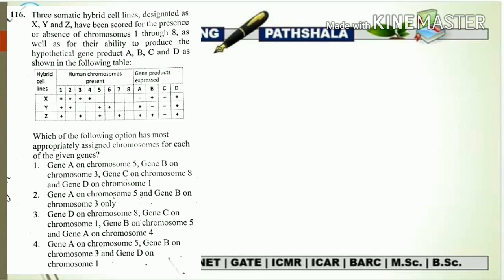So they have given you a hybrid cell line that is XYZ and they told that there is a presence of chromosomes from chromosome number 1 to chromosome number 8, and those chromosomes are responsible for the production of an enzyme — or you can say the production of a gene product — that is A, B, C and D. Now you have to find which gene is going to be present on which chromosome.